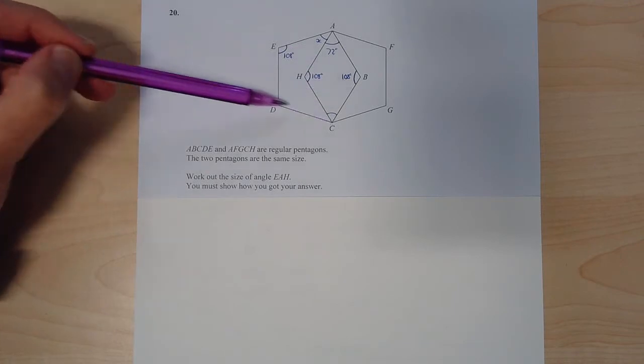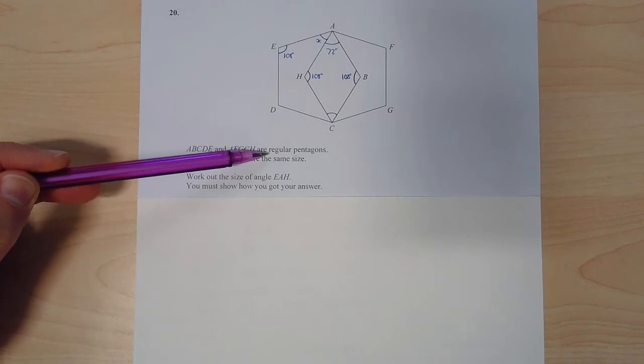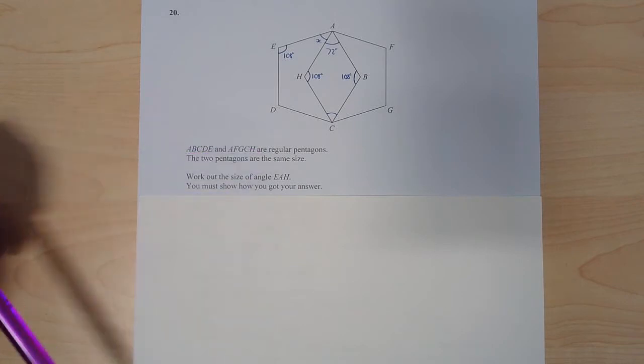Just looking in here we can see we've got this pentagon here and then we've got this other one which overlaps it and they're regular pentagons. So that tells me all the angles within the pentagon are the same and the lengths of the pentagon are the same as well.